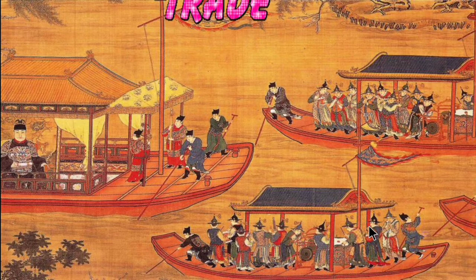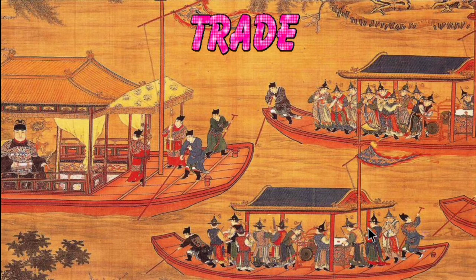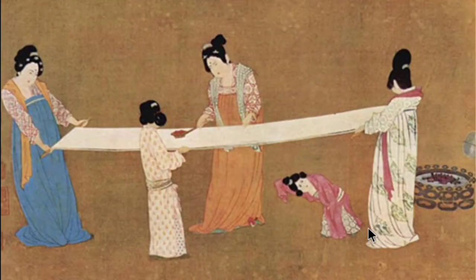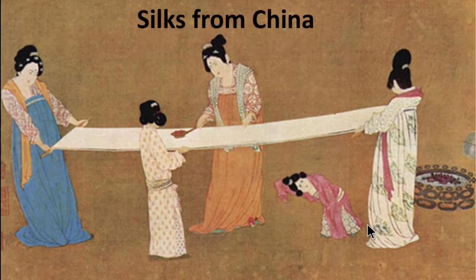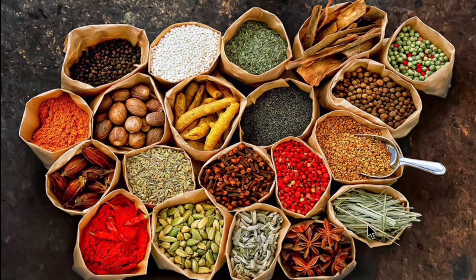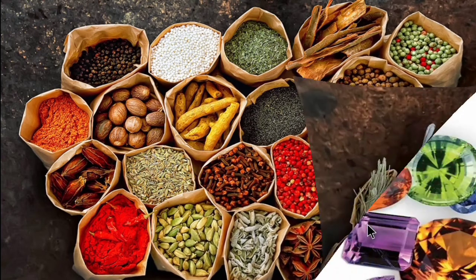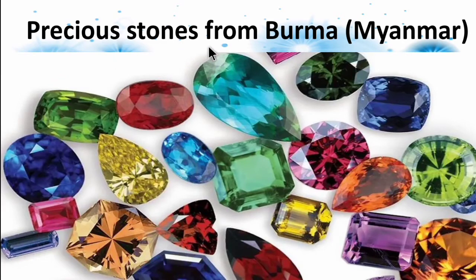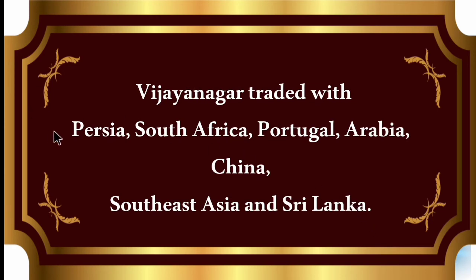During the Vijayanagara empire, inland, coastal, and overseas trade flourished. Imported goods included silk from China, spices from the Malabar region, and precious stones from Burma (Myanmar). The Vijayanagara kingdom also traded with Persia, South Africa, Portugal, Arabia, China, Southeast Asia, and Sri Lanka.